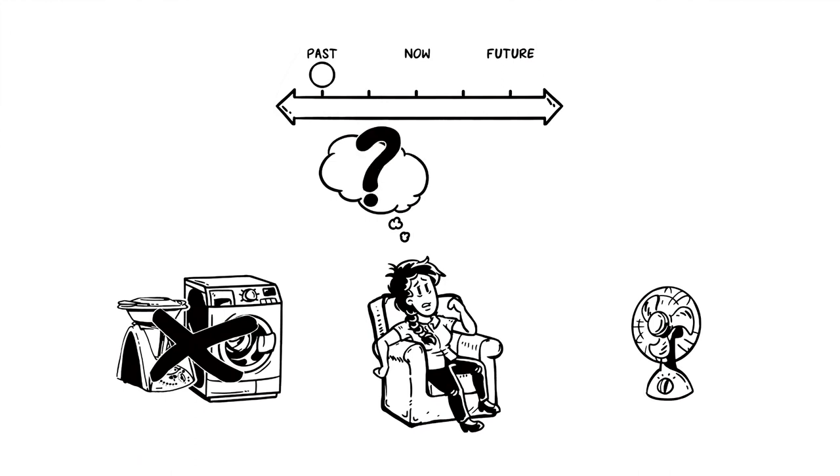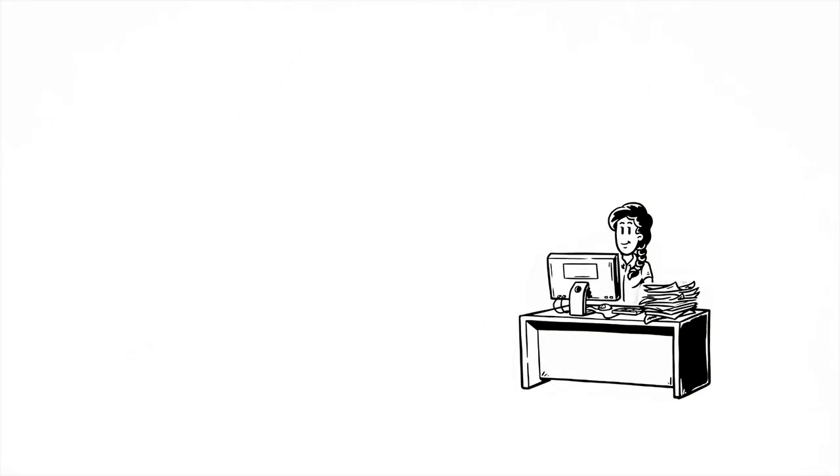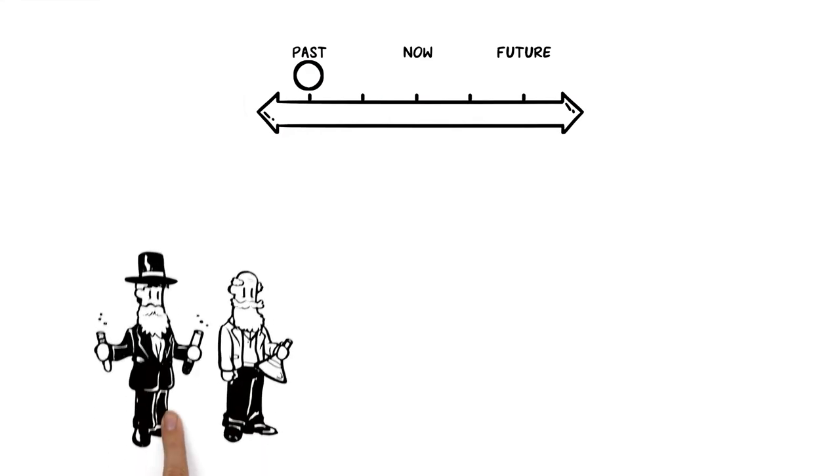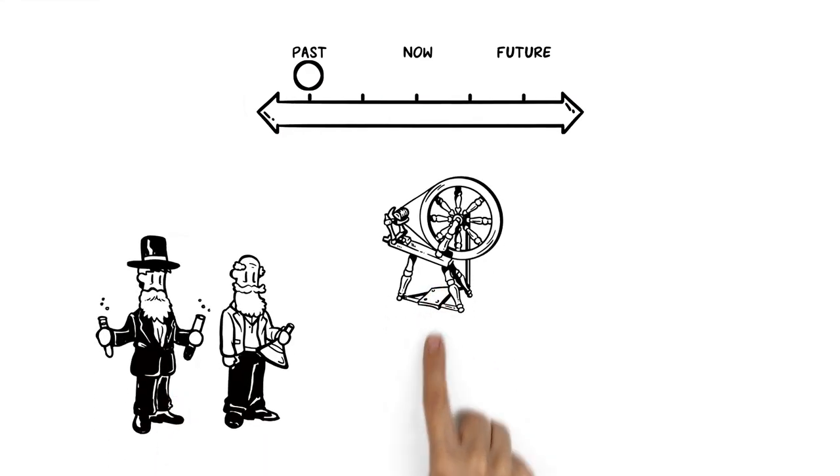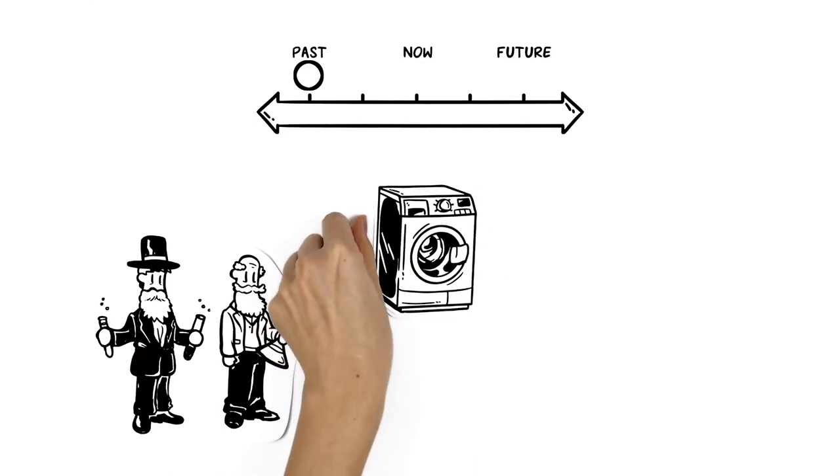She wonders how they managed it. At the time, scientists had only invented spinning wheels and cranks, which led to the tools Hannah uses in her busy day.